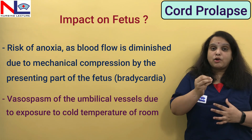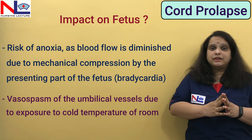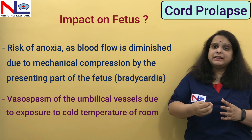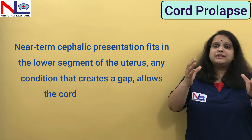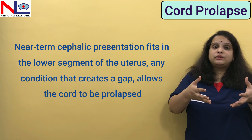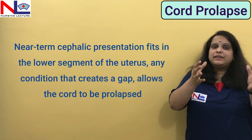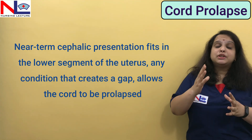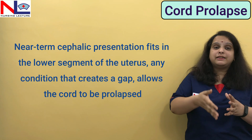It must be detected as early as possible as it is an emergency situation. Now, we'll discuss what risk factors allow the cord to be prolapsed. As we know, once delivery is going to happen, the presenting part slowly sinks down into the lower uterine cavity and occupies that whole space. Normally, when the presenting part occupies this whole space, there is no space remaining that allows the cord to be prolapsed. But there are some situations where the cord gets some space, and this space allows the cord to slip down and come out.